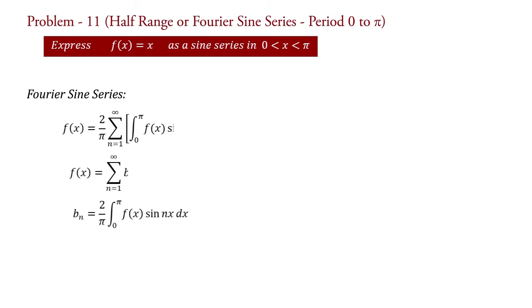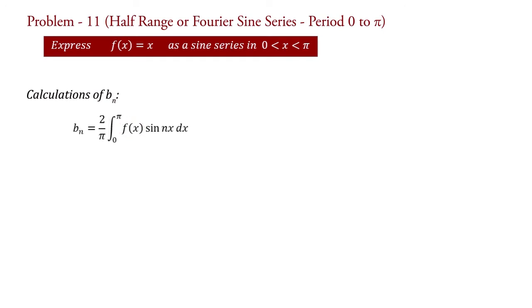First of all, we will calculate bn. bn equal to 2 upon π integral 0 to π f of x sin nx dx. Put f x equal to x. Therefore, bn equal to 2 upon π integral 0 to π x sin nx dx.